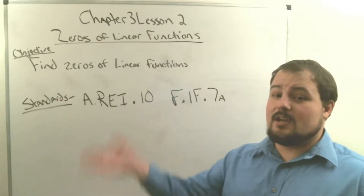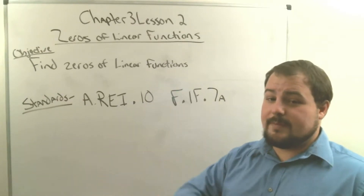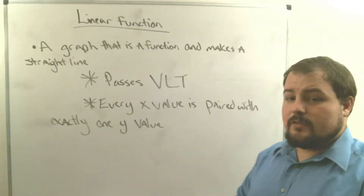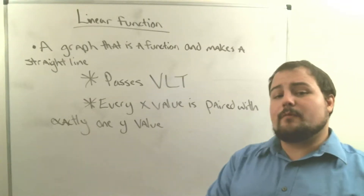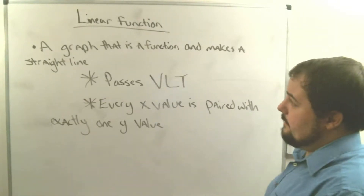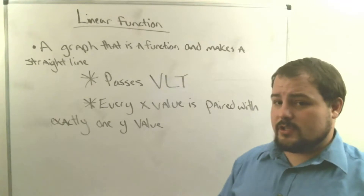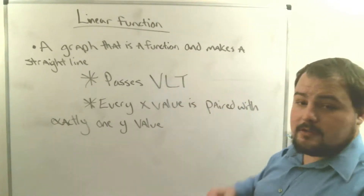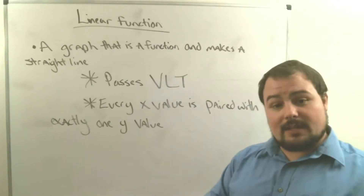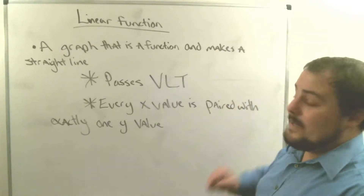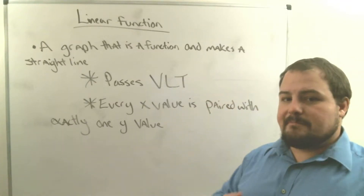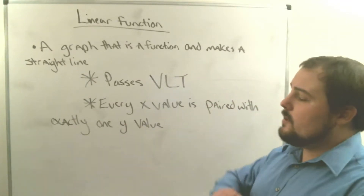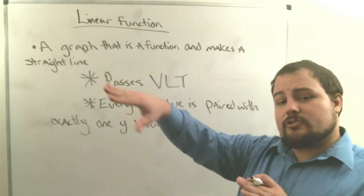Most of you got this in class, but we're just going to bring it back with this video. With this idea of a linear function, we want to look at the definition first. A linear function is a graph that is a function and it makes a straight line, because the word 'linear' means line.